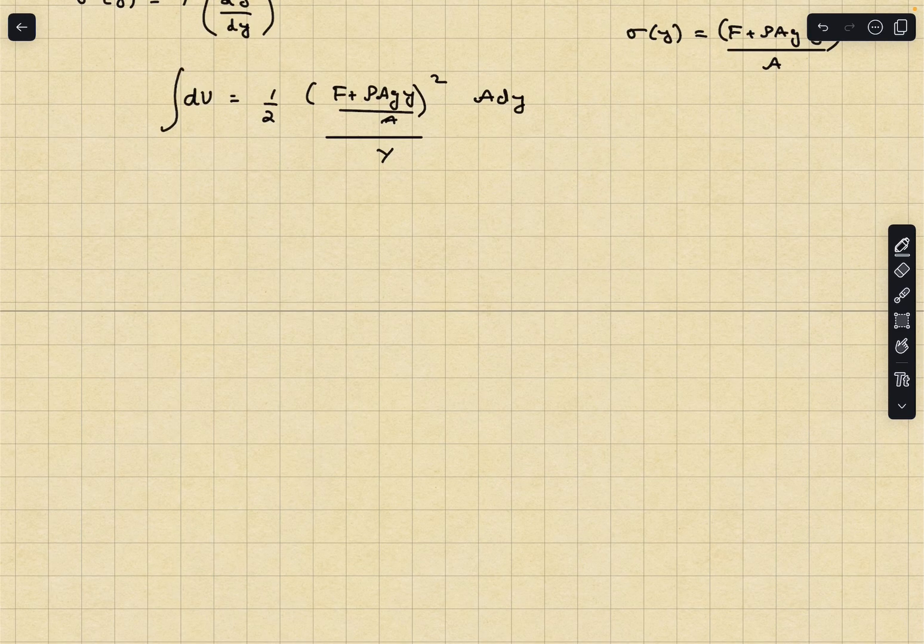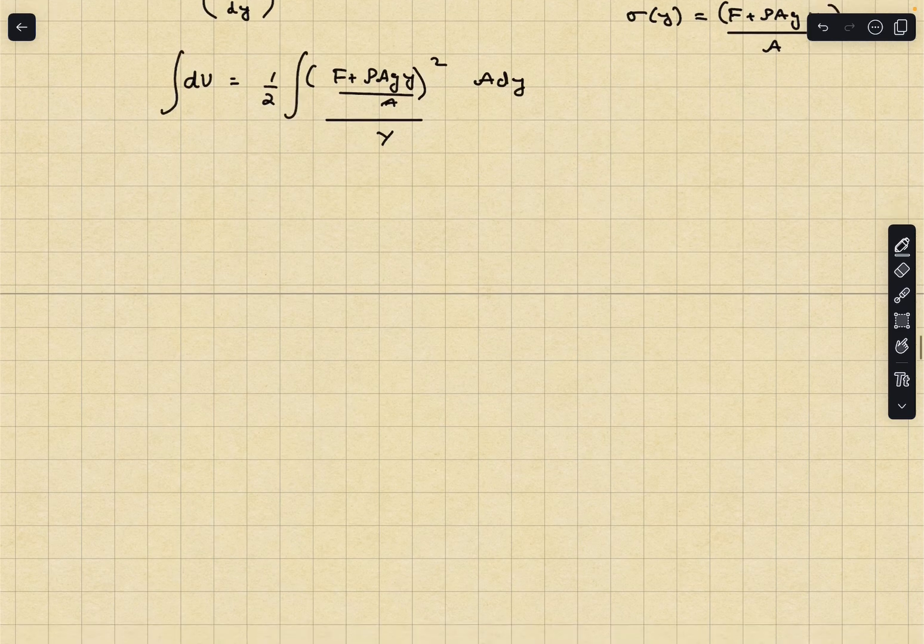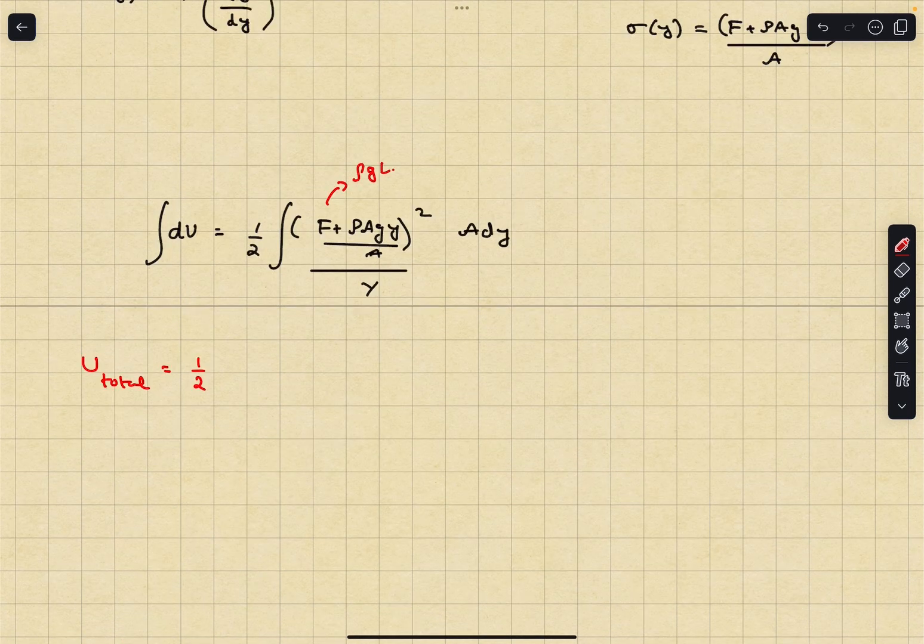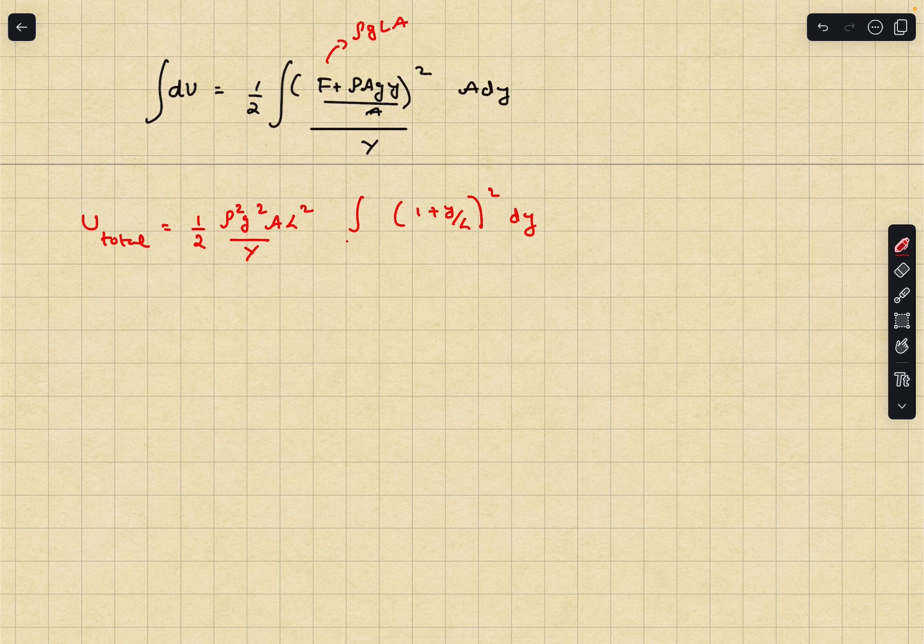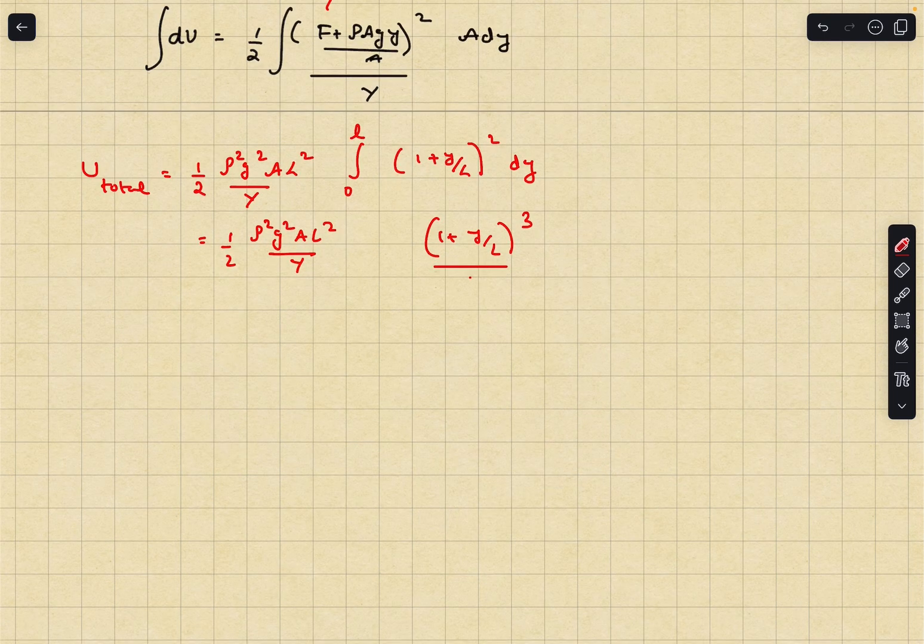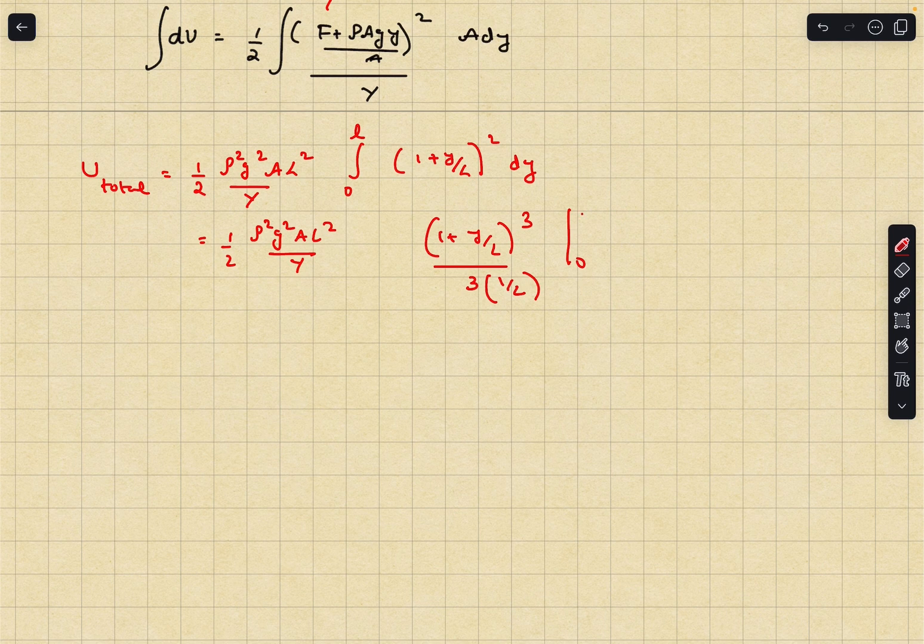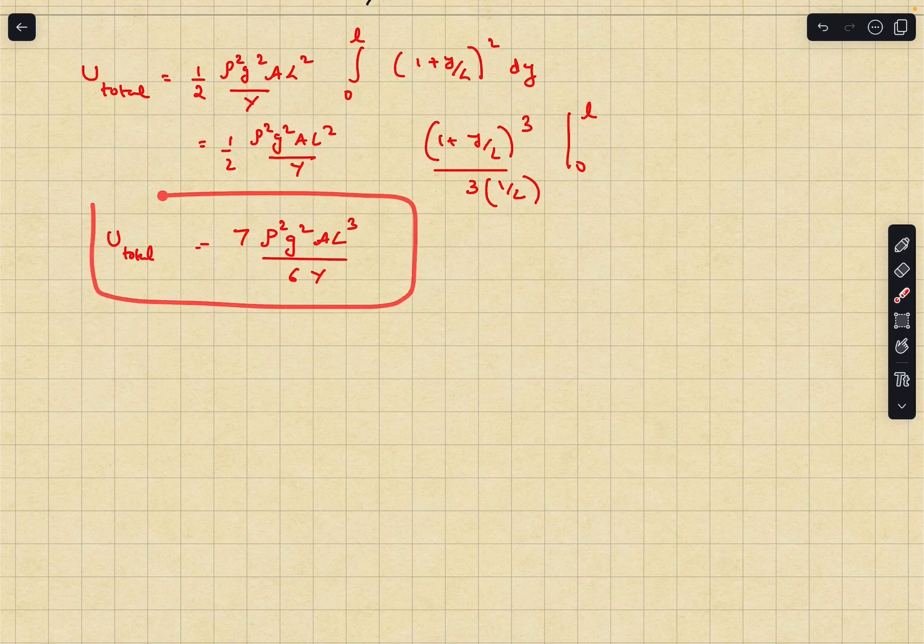You might have guessed it, we are going to integrate this expression. I'm going to substitute F as rho g L A. So I can take rho A g common and I obtain this expression. I'm going to integrate it from 0 to L. This is going to be 1 plus y by L cubed divided by 3. We have to multiply it with a 1 by L as well and the limits go from 0 to L. So this is going to be our final answer.